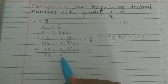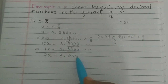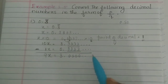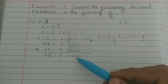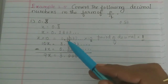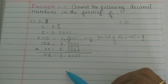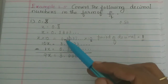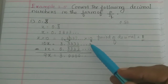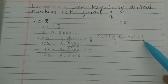Now, 10 minus 1 is 9, so 9x is equal to... 3 minus 0 is equal to 3. The decimal part 3 minus 3, 3 minus 3, all are equal to 0. So 9x is equal to 3. We will use the period of decimal: period of decimal 1 is equal to 10, 2 is equal to 100.